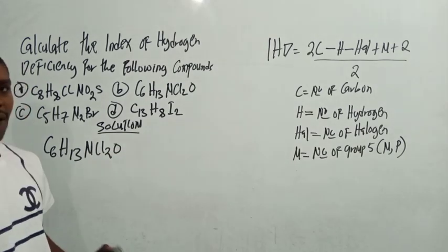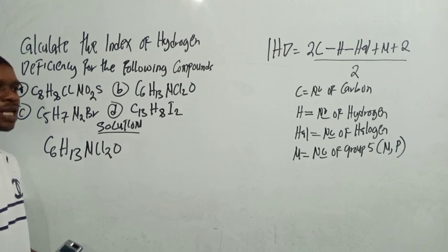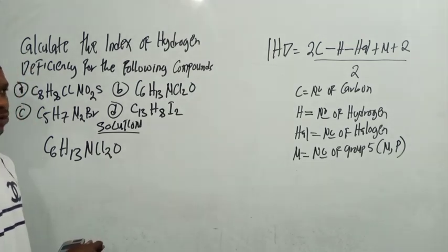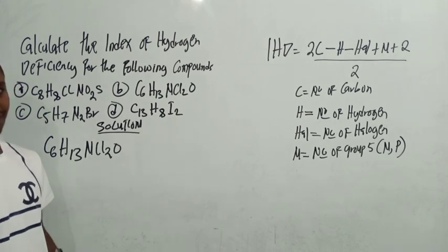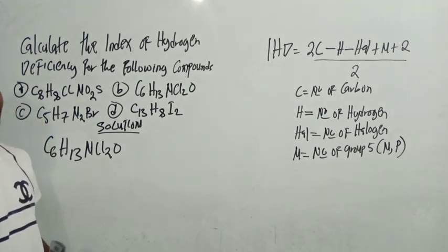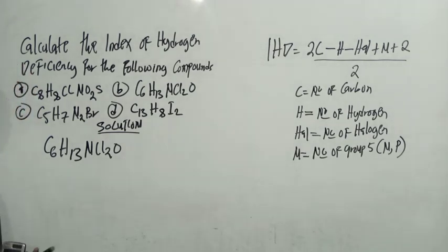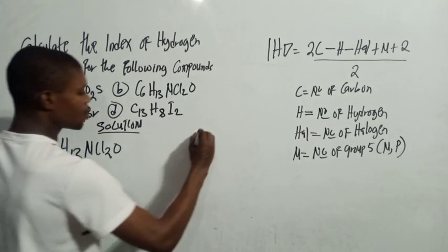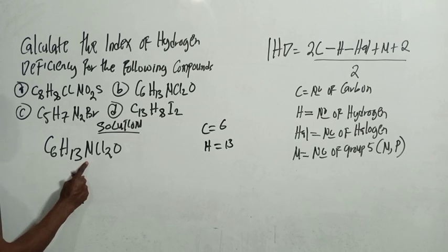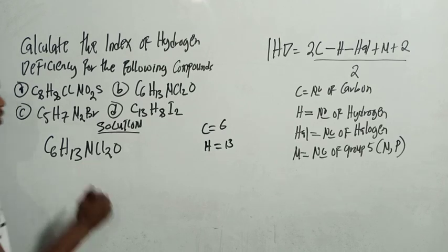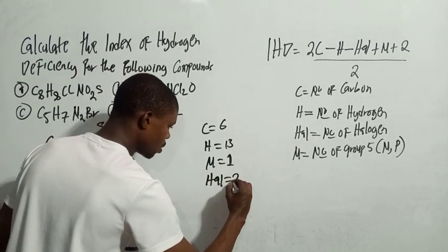Let's look at the second example: C6H13NCl2O. You can pause the video here and try to do it yourself. Carbon is 6. Hydrogen is 13. The group five element nitrogen gives N = 1. We have two halogens (chlorine × 2), so halogen count is 2. Oxygen is ignored.